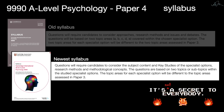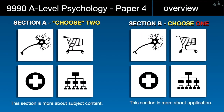Now that we have that important piece of advice, you can stop the video or keep going as we look at the paper as a whole. This paper is broken up into two parts: Section A and Section B. Section A says choose two specialist options — I put 'choose' in quotes because most schools and teachers concentrate on only two of the four specialist options.